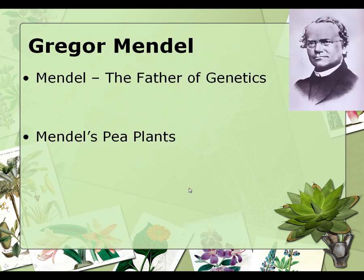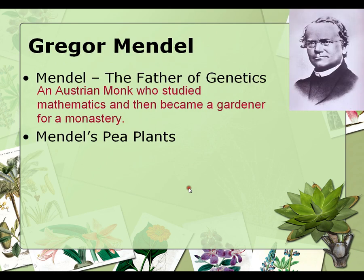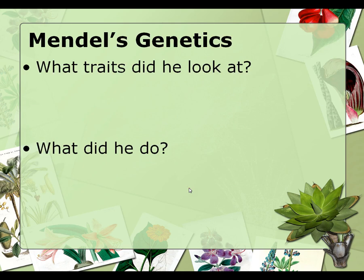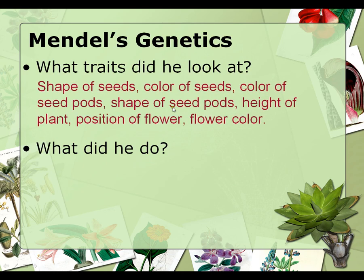Gregor Mendel is considered the father of genetics because he's the first person to track a trait through several generations. He looked at several different traits of pea plants, and he picked a particular trait and then bred them together and followed it through several generations.